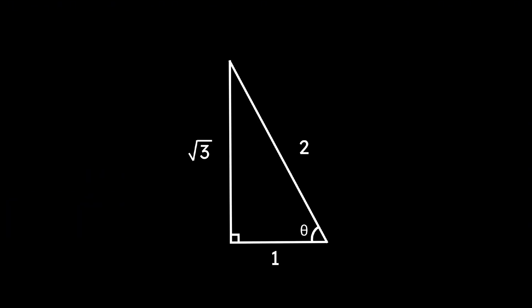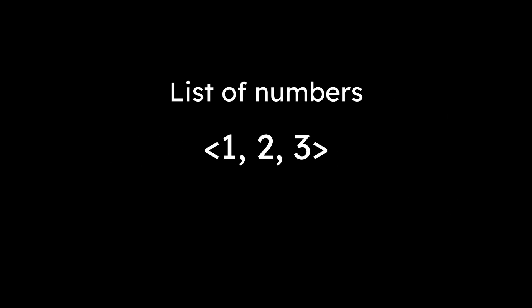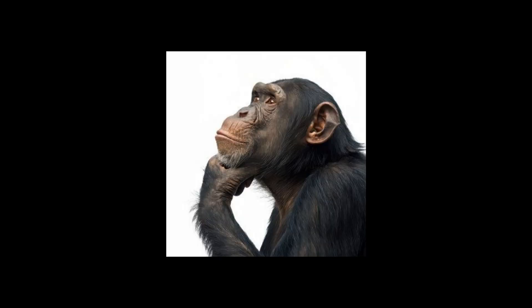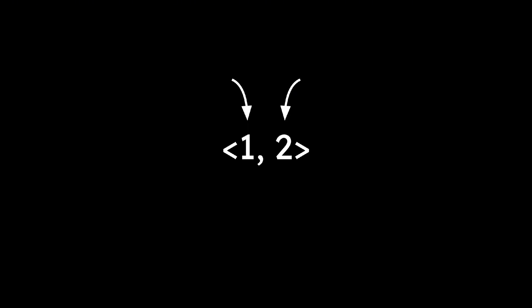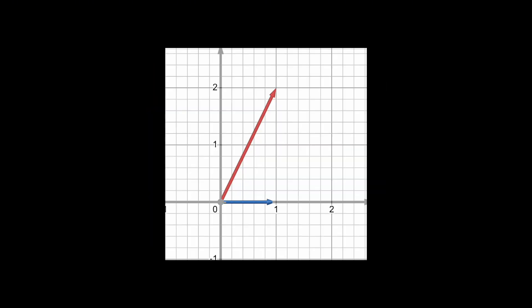All this talk about trig is getting boring, so it's about time we talk about vectors and matrices. A vector is a list of numbers, typically written in a single column or row. You can think of a vector geometrically as an arrow in space, usually starting at the origin. The numbers in a vector tell you how far to move along each dimension.